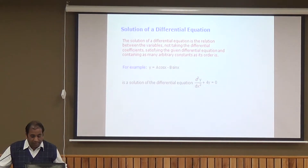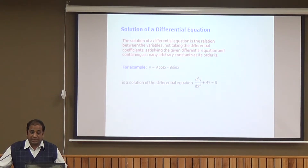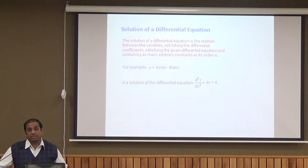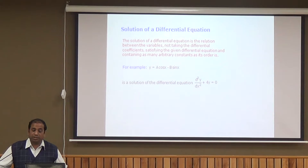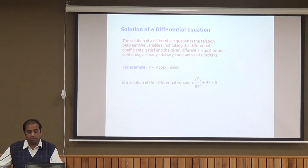Whenever we have an equation we need to find its solution. The solution of a differential equation is the relation between the variables, not taking the differential coefficients, satisfying the given differential equation and containing as many arbitrary constants as its order. For example, if y = a cos x − b sin x, there are two arbitrary constants, so we can guess the order of the differential equation is 2. Differentiating it twice, we get d²y/dx² + 4y = 0.